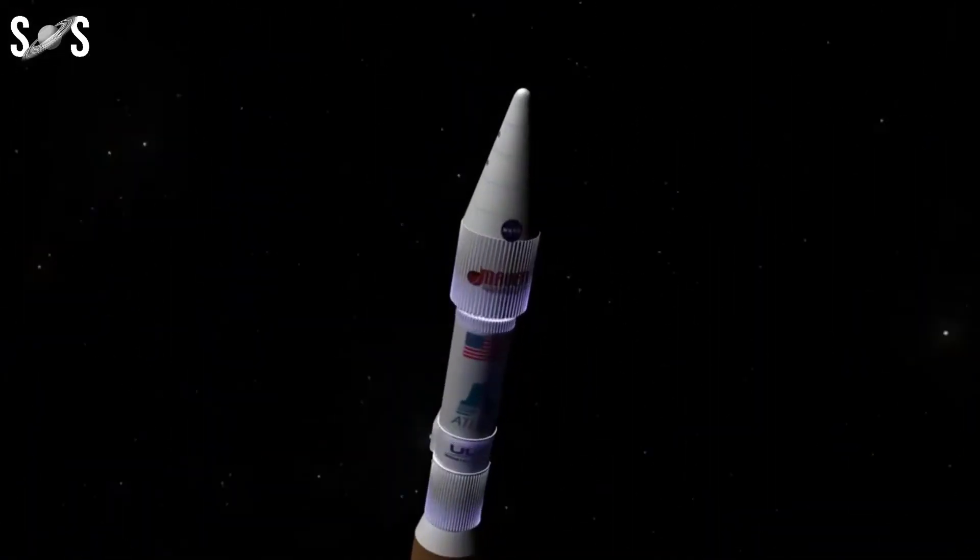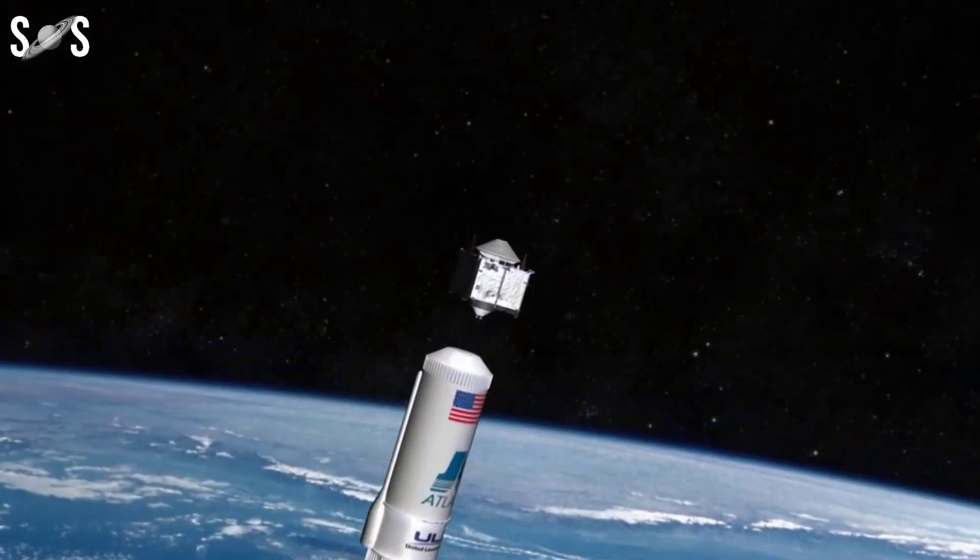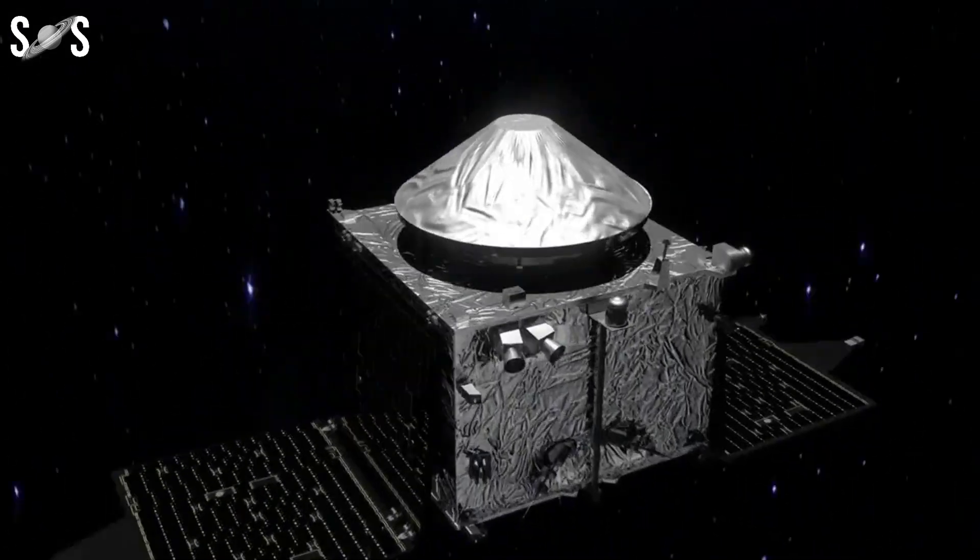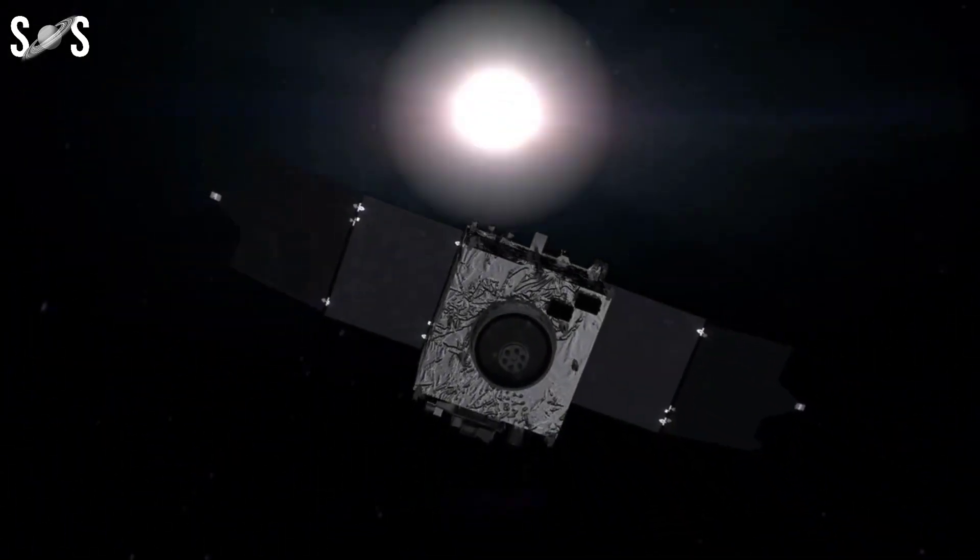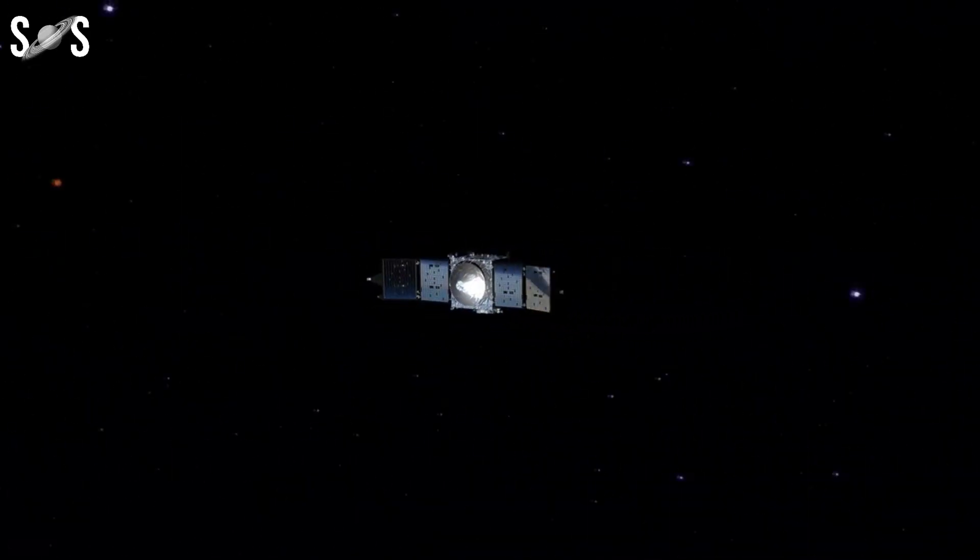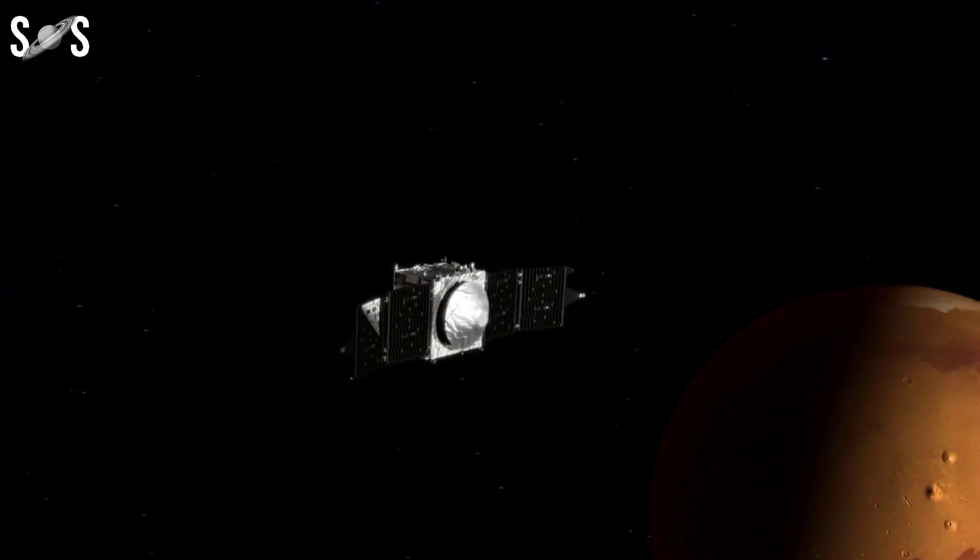Satellite damage: Solar storms can negatively impact satellites in orbit around Earth. The charged particles from the storm can cause damage to sensitive electronics onboard satellites, leading to temporary or permanent malfunctions.